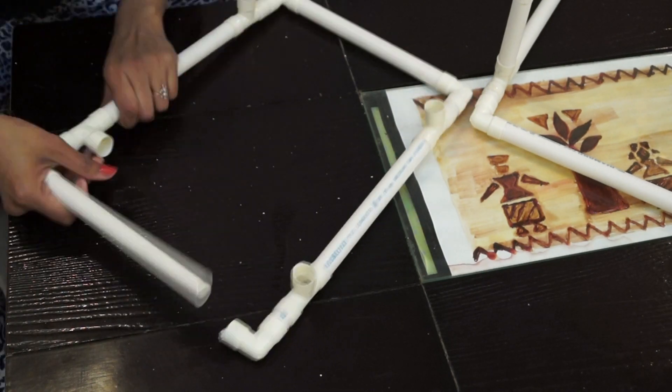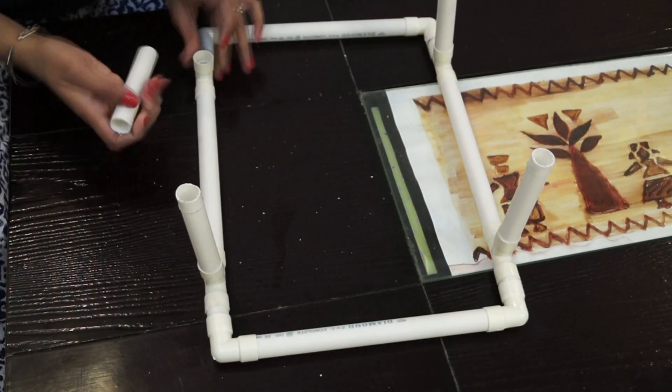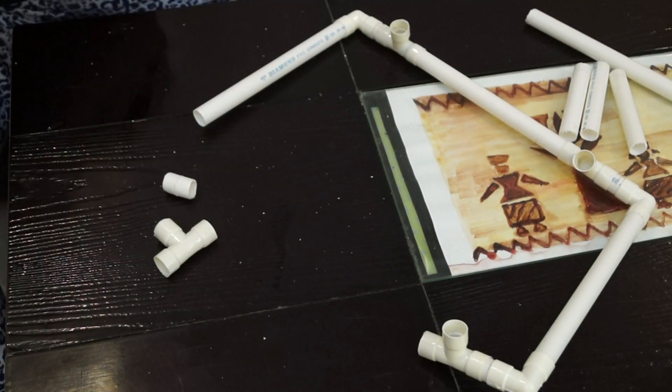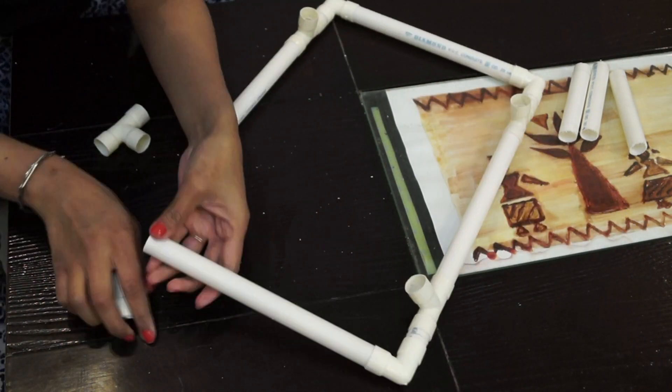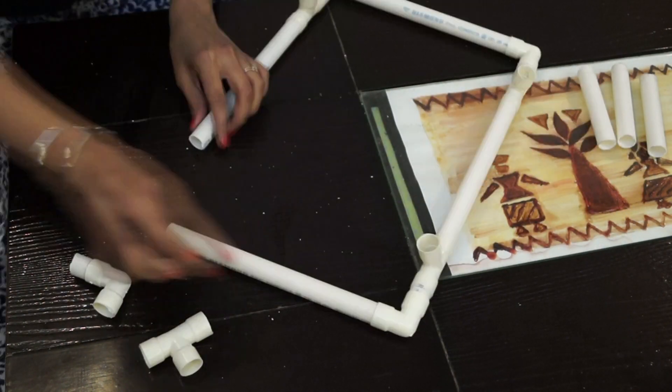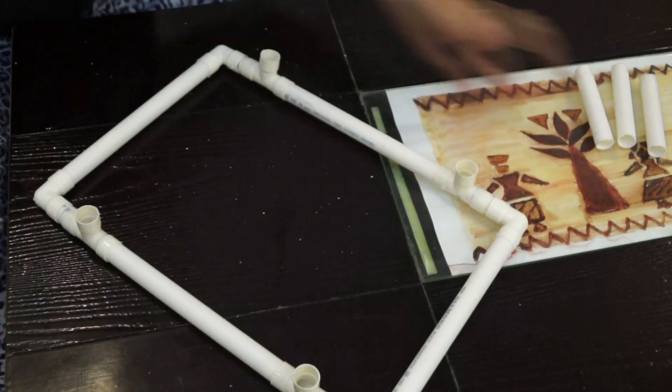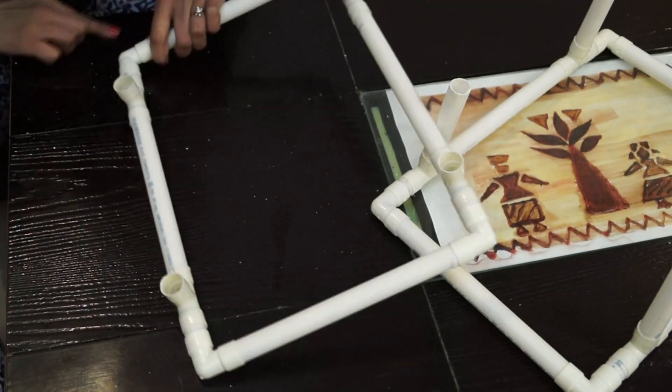So as you can see, it's quite easy to make this locker stand. It will hardly take half an hour and you can make your own locker stand. All you need to do is just take proper measurement, cut the PVC pipes and just simply attach them with the help of these bends and T-joints.